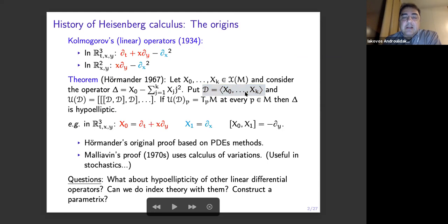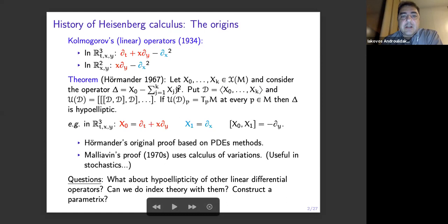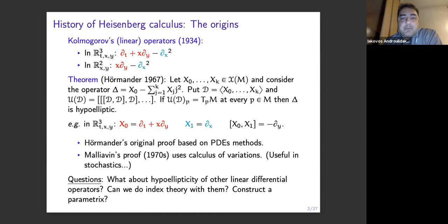And you take this D here — the C-infinity module generated by these vector fields — this is a modern way of thinking, maybe it was not stated exactly like this — and then you take the iterated brackets, then if they generate the whole tangent bundle. Sorry, is it a typo, X_J²? Yeah, it's a typo, thank you — it's X_J squared, the second J should not be there. So if they generate all the vector fields, then Hörmander was able to prove using PDE methods that this operator is hypoelliptic.